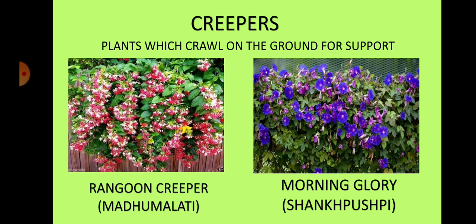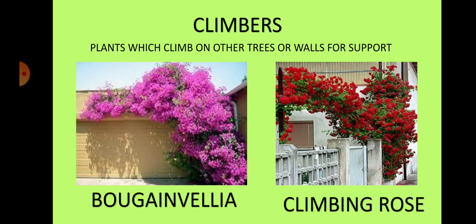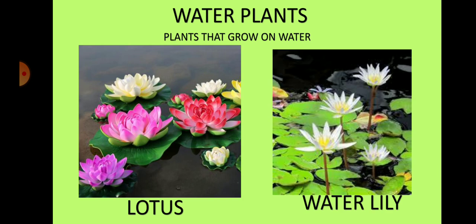Plants which crawl on the ground for support are called creepers. Rangoon creeper, or madhu malati, and morning glory, or shankh pushpi, are flowering creepers. Plants which climb on other trees or walls for support are called climbers. Bougainvillea and climbing rose are examples of flowering climbers. Apart from this, some plants also grow in water — they are called water plants. Lotus and water lily are examples of water plants.